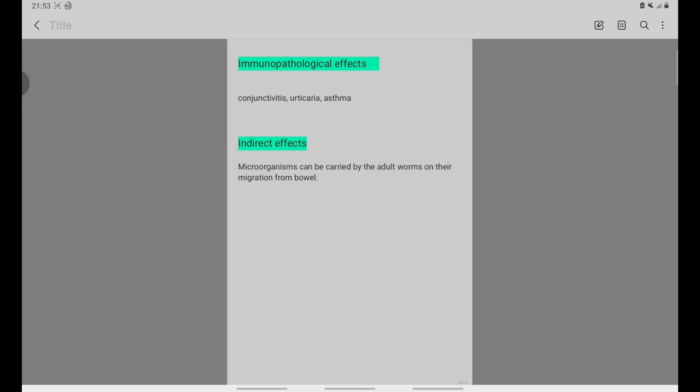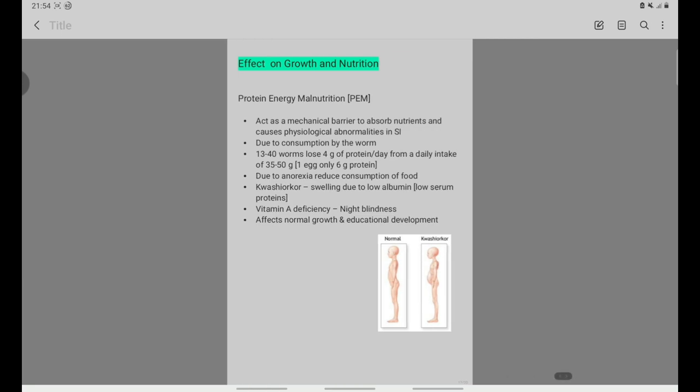Immunopathological effects include conjunctivitis, urticaria, and asthma. Indirect effects occur when migrating adult worms carry microorganisms. Growth and nutritional effects include protein-energy malnutrition due to mechanical interference with nutrition absorption in the small intestine.